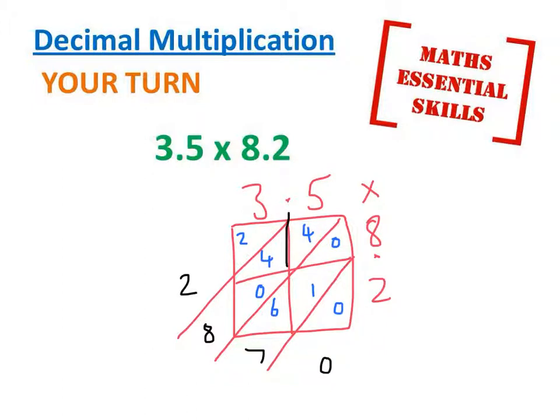The decimals go down and across until they meet. They go down the slide to tell you where the decimal goes. The answer to this question is 28.7 or 28.70.